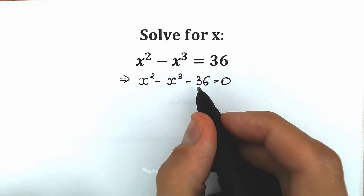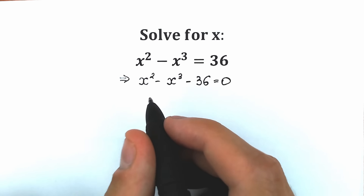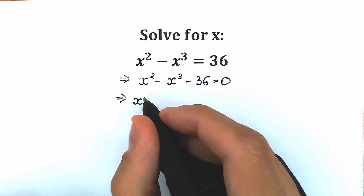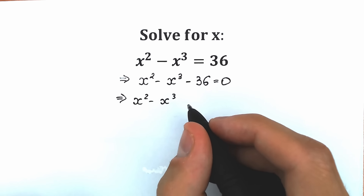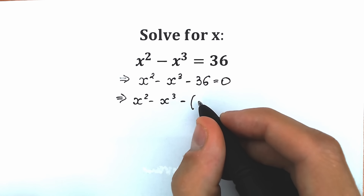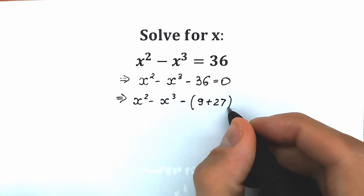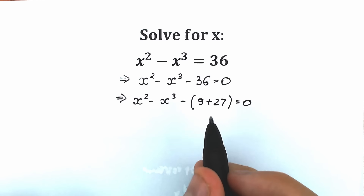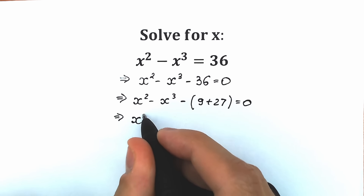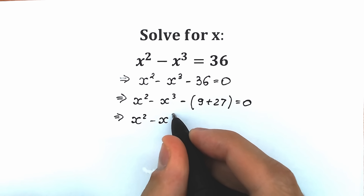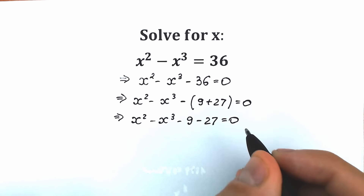Really great. Right now, instead of writing 36, let's write 9 plus 27. So we have x squared minus x cubed, and instead of 36 we write minus 9 plus 27. It changes nothing, but it helps us a lot, because now we're going to open parentheses. So we have x squared minus x cubed minus 9 and minus 27 equal to 0.